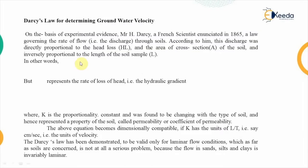What is Darcy's law? Darcy's law is used for determining the groundwater velocity — the rate at which water flows in the ground. On the basis of experimental evidence collected by H. Darcy, a French scientist, he initiated a new law governing the rate of flow, that is the discharge through soils. According to him, the discharge was directly proportional to the head loss and the cross-sectional area of the soil, and inversely proportional to the length of the soil sample.